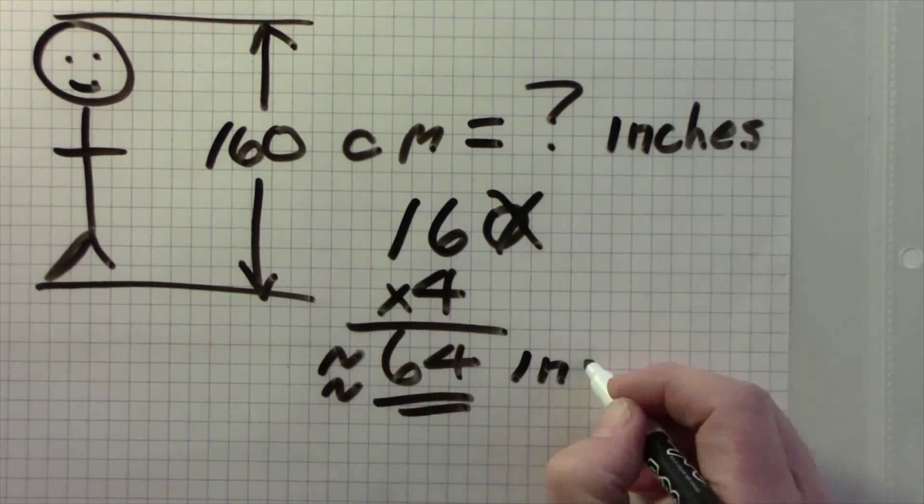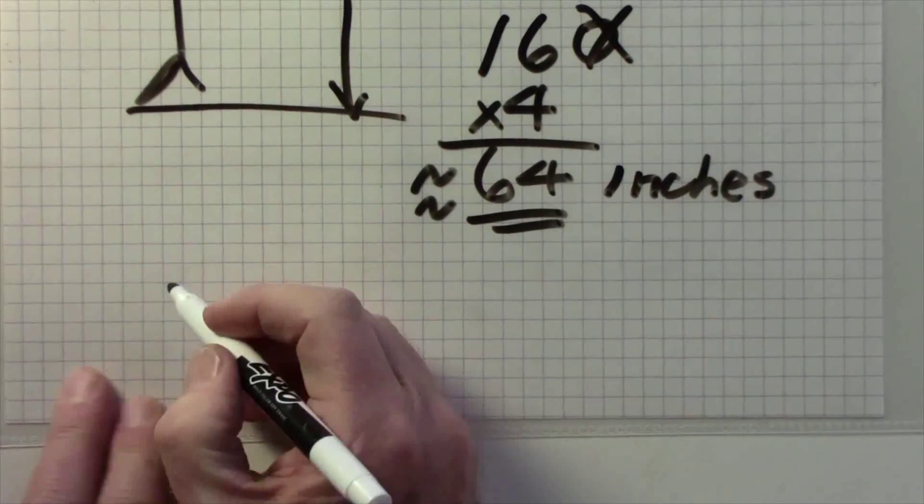Cross off the last digit, multiply by 4, and you get 64 inches. Little squiggles mean about 64.